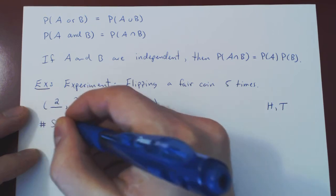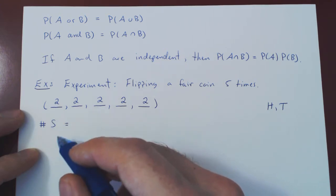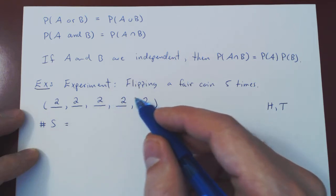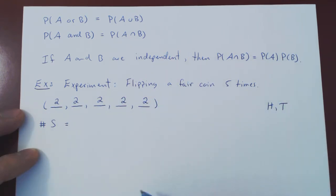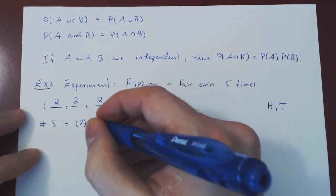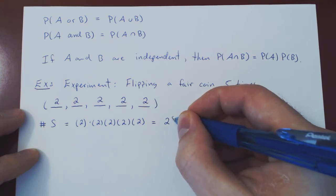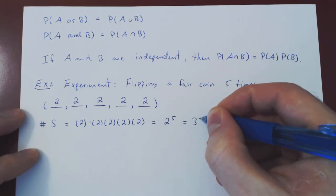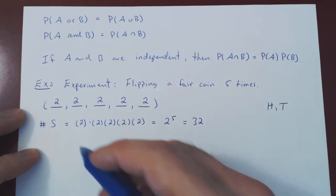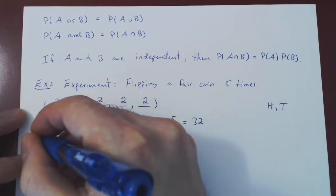How many possible outcomes are there in our sample space? S contains all possible outcomes, and our outcomes here are five-tuples — for example, heads, heads, tails, tails, heads — where every element is either heads or tails. There are two options for the first flip, and when we say AND we multiply: two for the second, two for the third, two for the fourth, and two for the fifth. This gives us 2^5 total possible outcomes, which is 32. That's the size of our sample space — 32 different outcomes for our experiment.